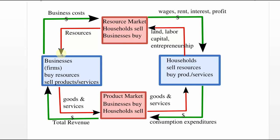Up on top here in red we have the resource market — that's where people sell resources they have: their labor, their land, their entrepreneurial ability. Households are selling these things in the resource market, and these resources in red flow to the businesses where they can use the land and things that come out of the land like timber, and the labor, the entrepreneurship, and the capital — meaning machines, buildings, things like this.